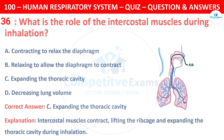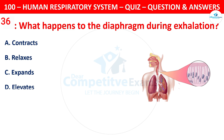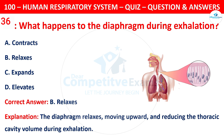Question 36: What happens to the diaphragm during exhalation? The correct answer is B — it relaxes. The diaphragm relaxes, moving upward and reducing the thoracic cavity volume during exhalation.